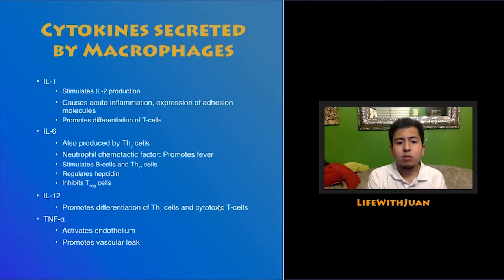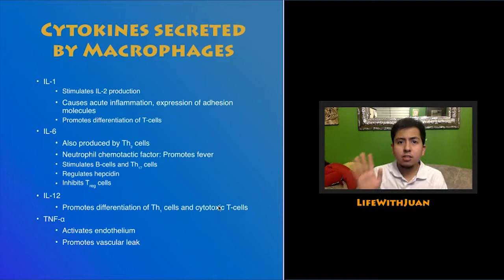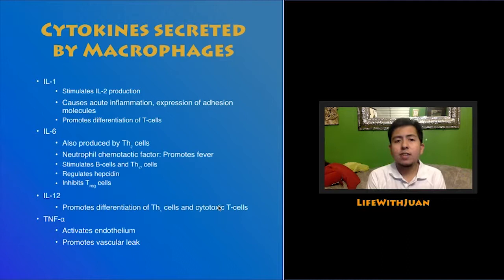IL-6 also inhibits T regulatory cells — expressed early on to tell them not to stop the inflammation before it starts. IL-12 promotes differentiation of TH1 cells and cytotoxic T cells. Tumor necrosis factor alpha activates the endothelium and promotes vascular leak, which allows neutrophils to pass through.